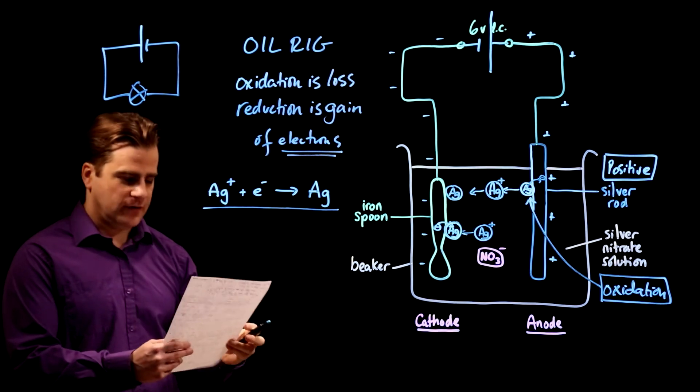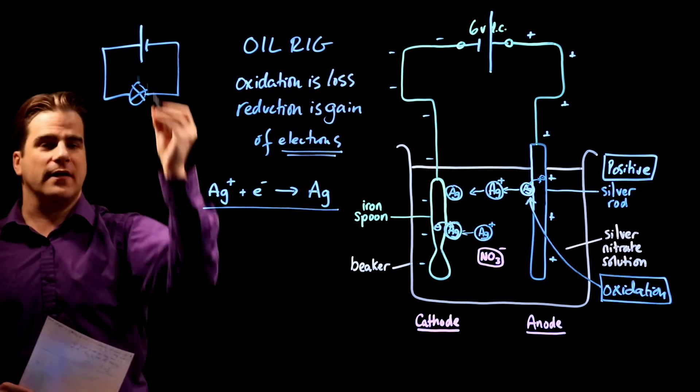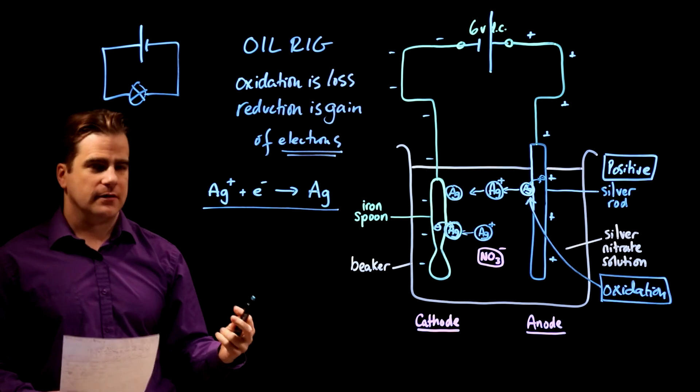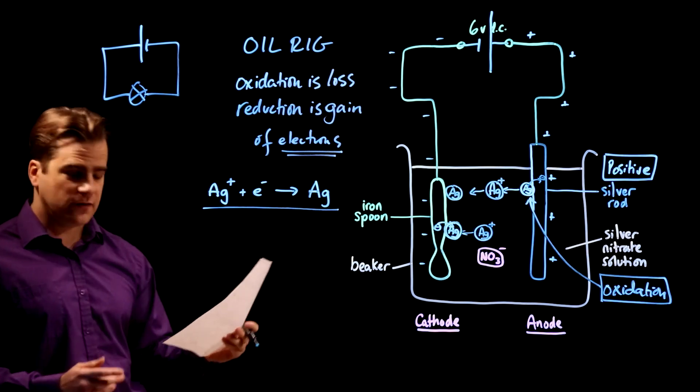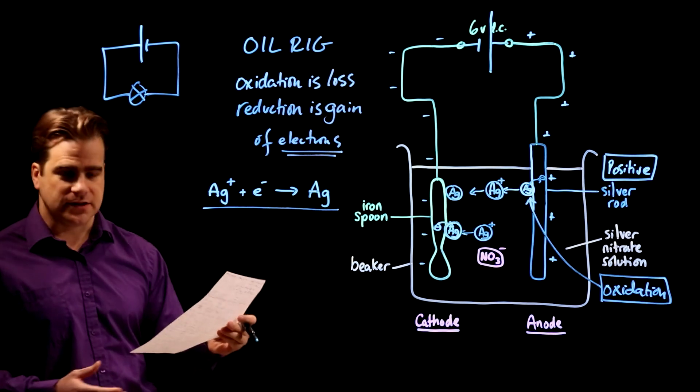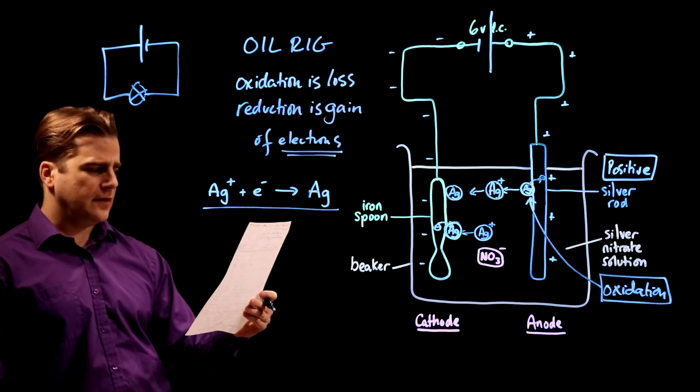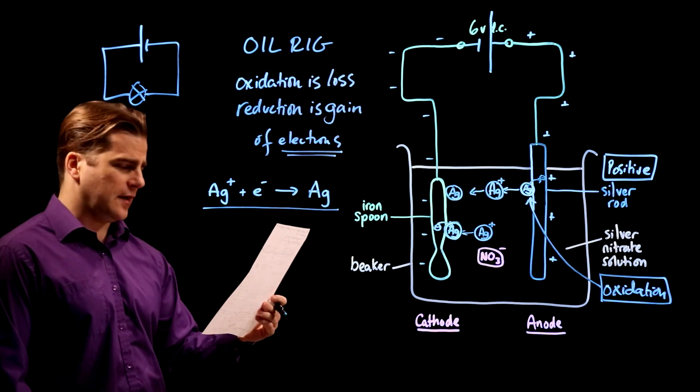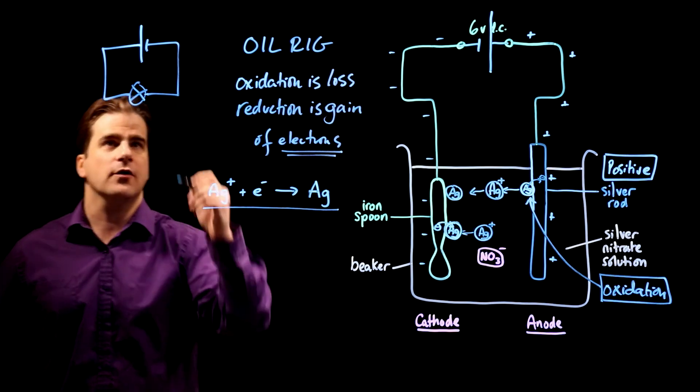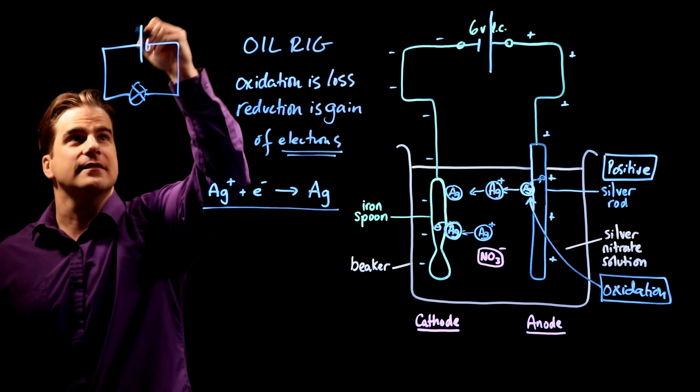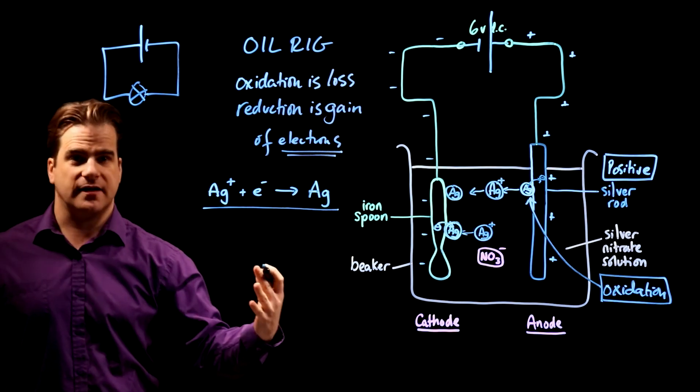And it's a question about why cells, if you just connected that circuit up and left it with this lamp on, why that cell would eventually run down. They just want you to regurgitate the textbook answer. I've looked at the specification for this 9 to 1 chemistry and this is what it says in the specification. Recall that, you need to be able to recall that a chemical cell produces a voltage until one of the reactants is used up.